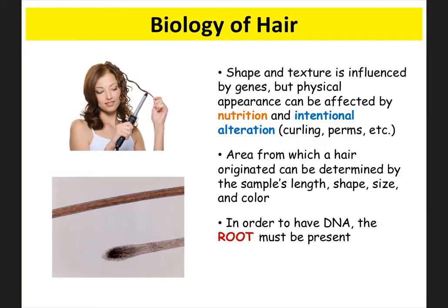There are a lot of different things that affect a person's hair, including genes, which can determine the shape or texture. But there are also natural things that can affect the appearance, like nutrition, and people will do intentional things to it, like getting it curled, permed, or dyed.